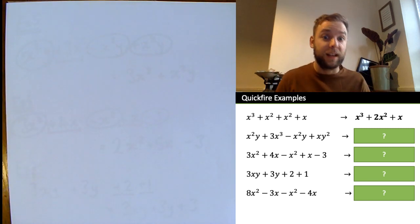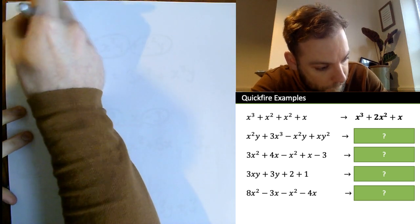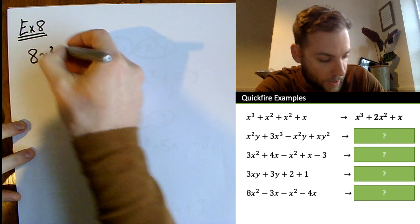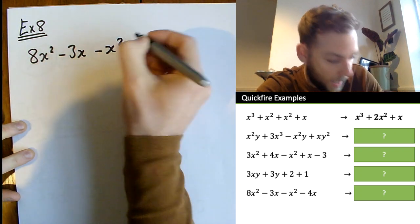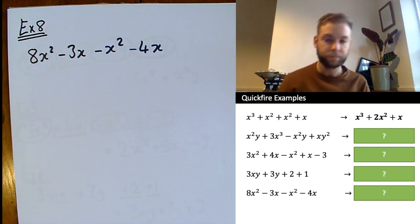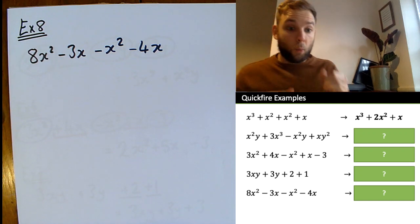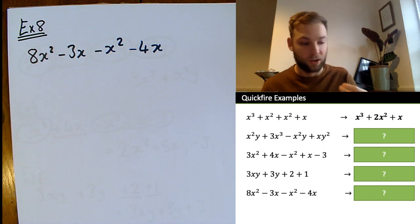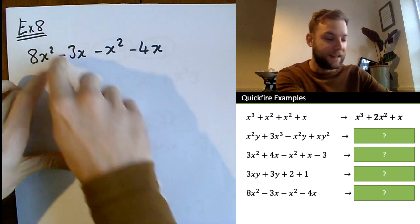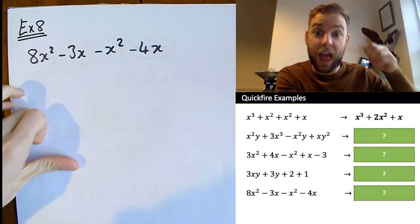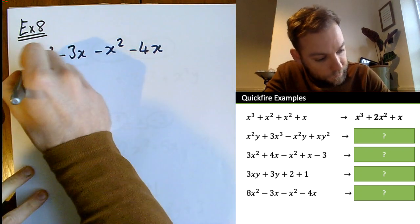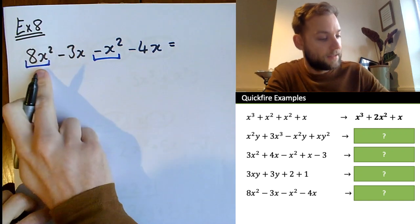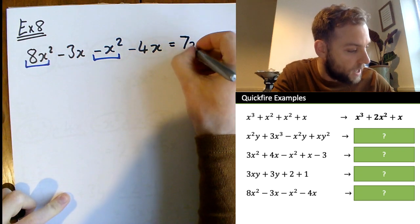Example eight: 8x squared minus 3x minus x squared minus 4x. The first term is x squared: 8x squared minus one x squared equals 7x squared. Next we handle the x terms.